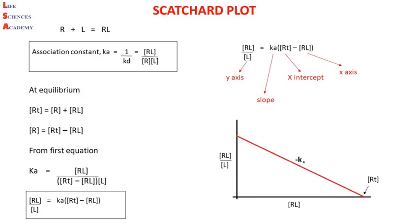Hello friends, I am Prabhakar. Today I am going to discuss the Scatchard plot. The Scatchard plot is used to quantify the binding affinity of a receptor to its substrate. It resembles the Michaelis-Menten plot given for enzyme-substrate interaction.